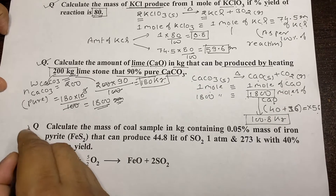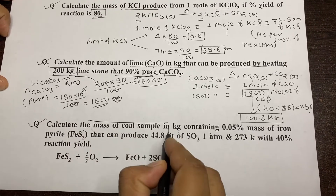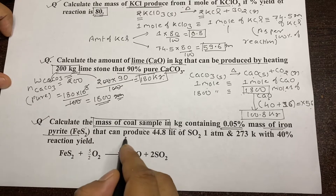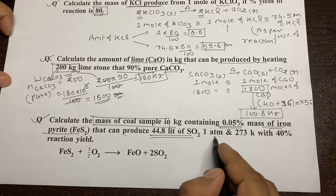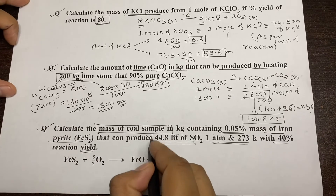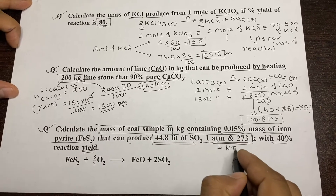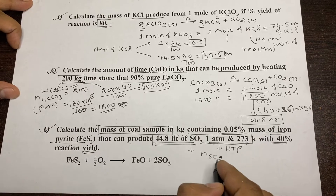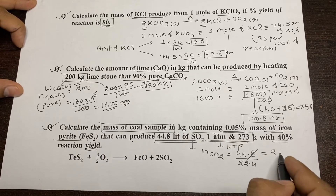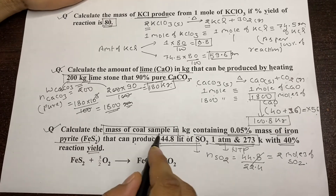In the next question: calculate the mass of a coal sample in kg that contains 0.05% by mass of iron pyrite (FeS₂), which can produce 44.8 liters of SO₂ at NTP (273 K). We calculate the moles of SO₂ produced: 44.8 divided by 22.4 gives 2 moles of SO₂.